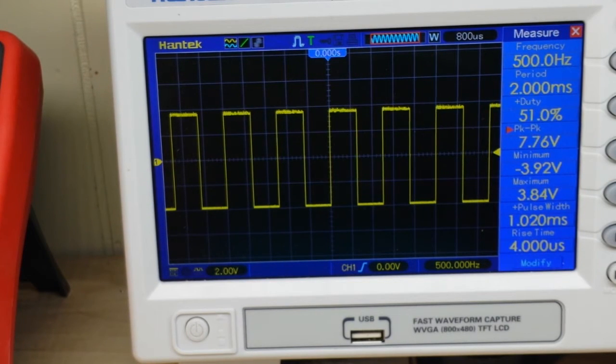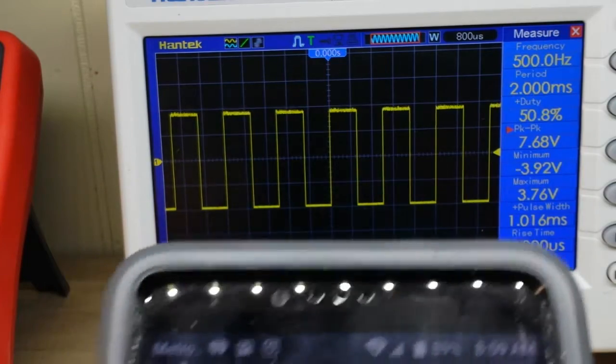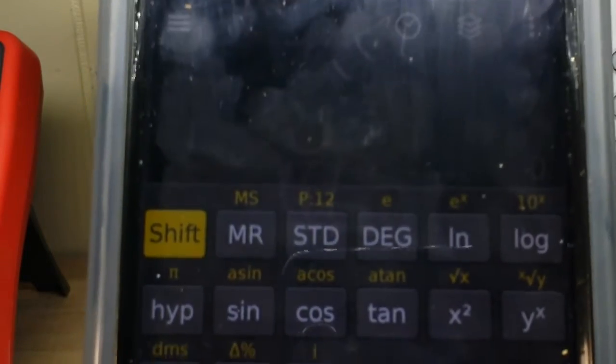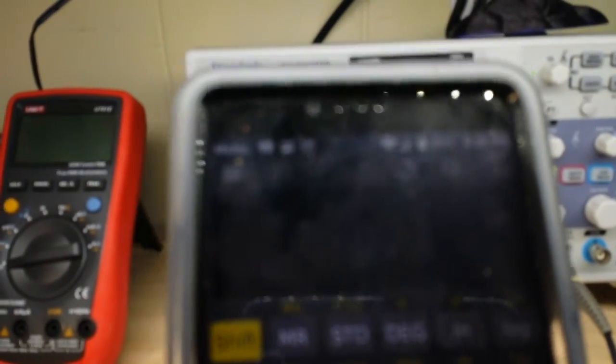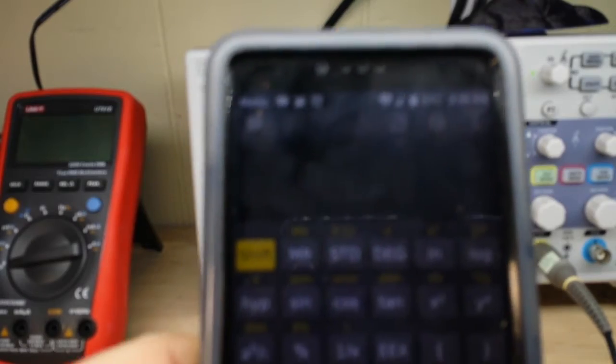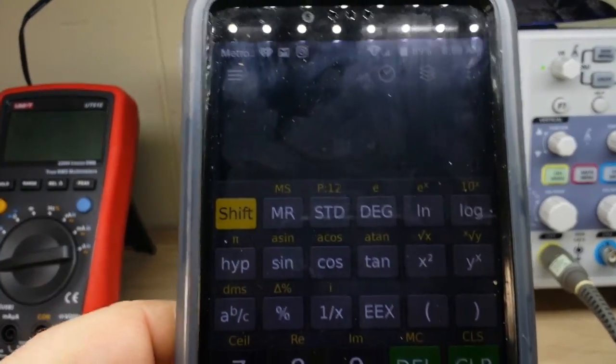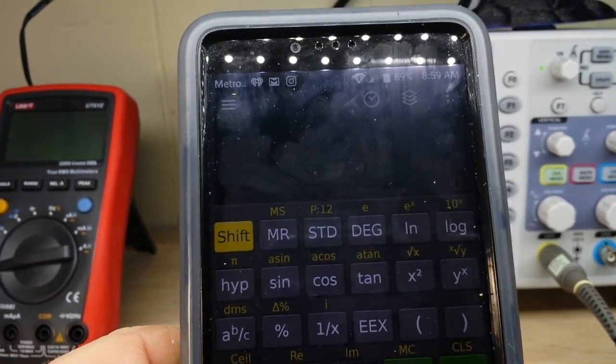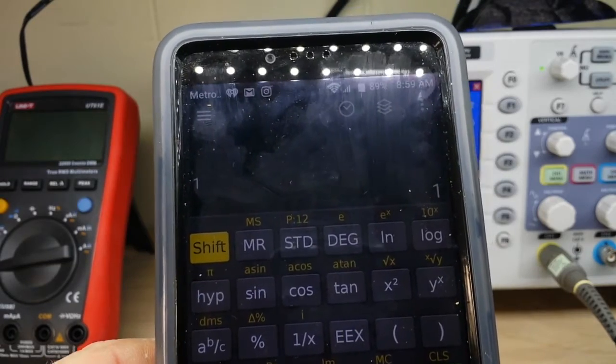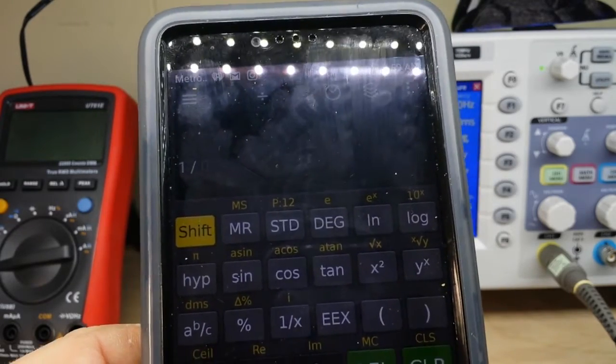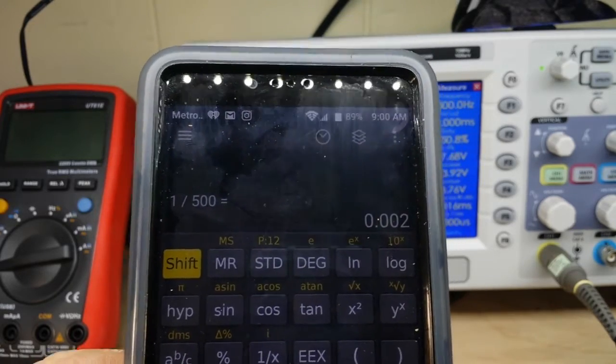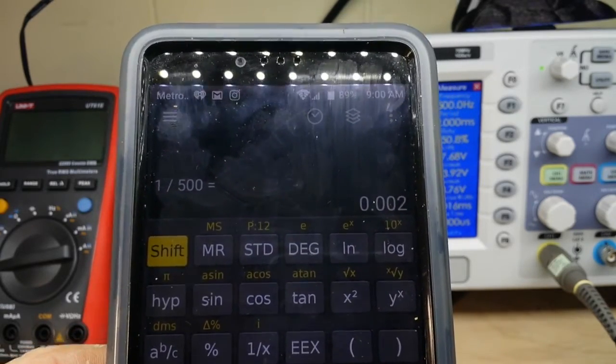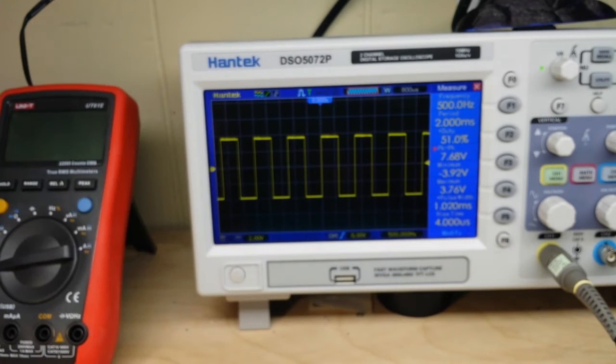Let's see if we can get my phone in here so we can use the calculator. Alright focus on it. There we go. So frequency or period is the reciprocal. So 1 divided by 500 is 0.002 or 2 milliseconds.